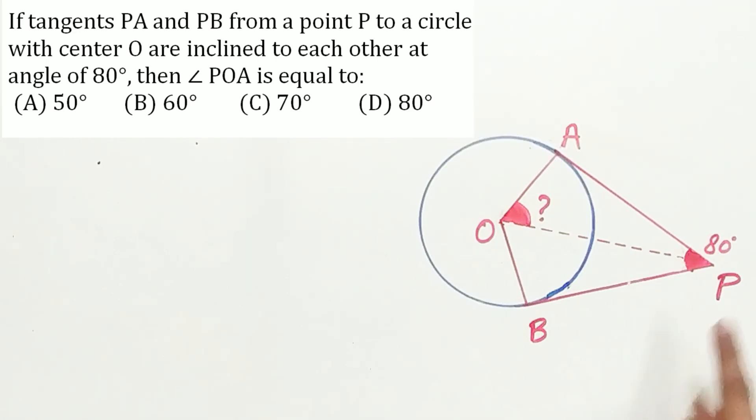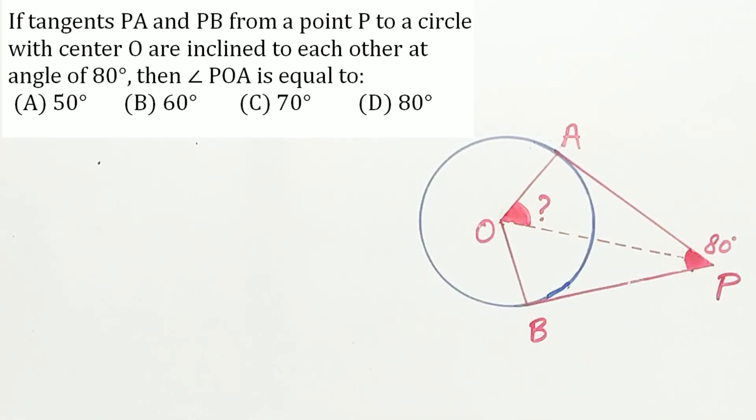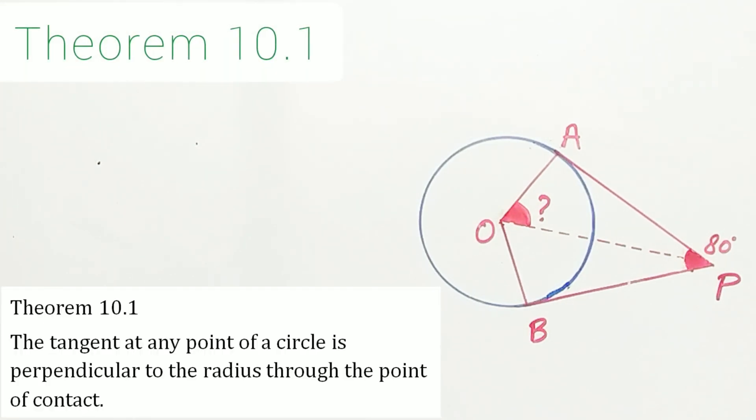Now look carefully. PA is a tangent, OA is a radius. They are both meeting at point A. Then, according to theorem 10.1, angle OAP is equal to 90 degree.